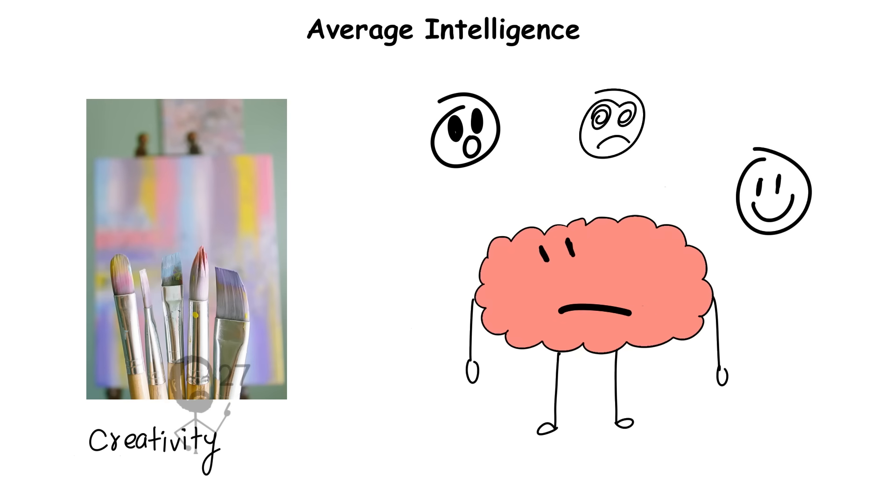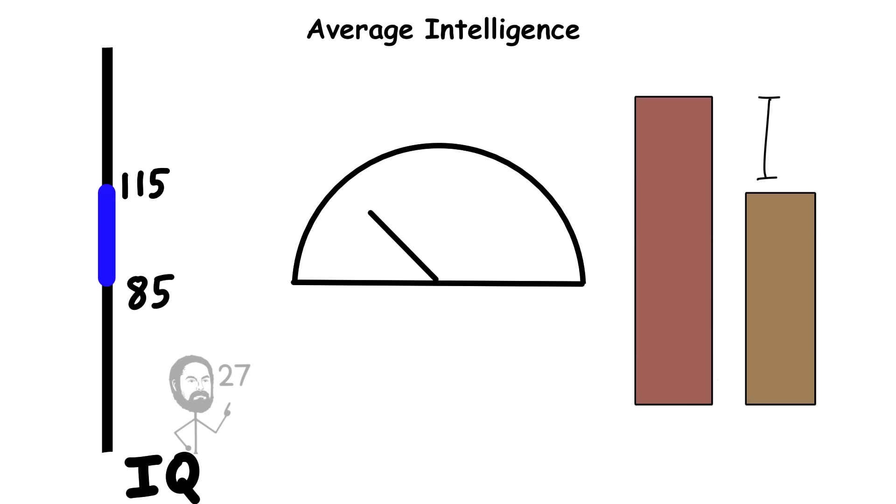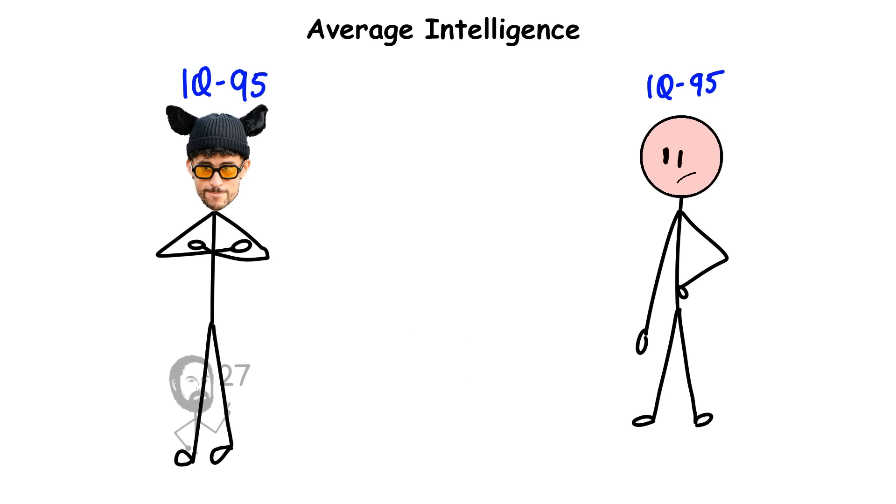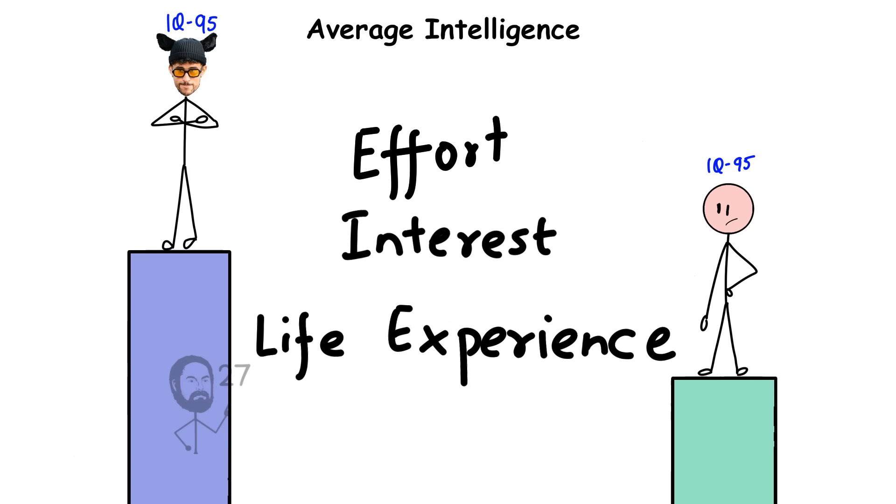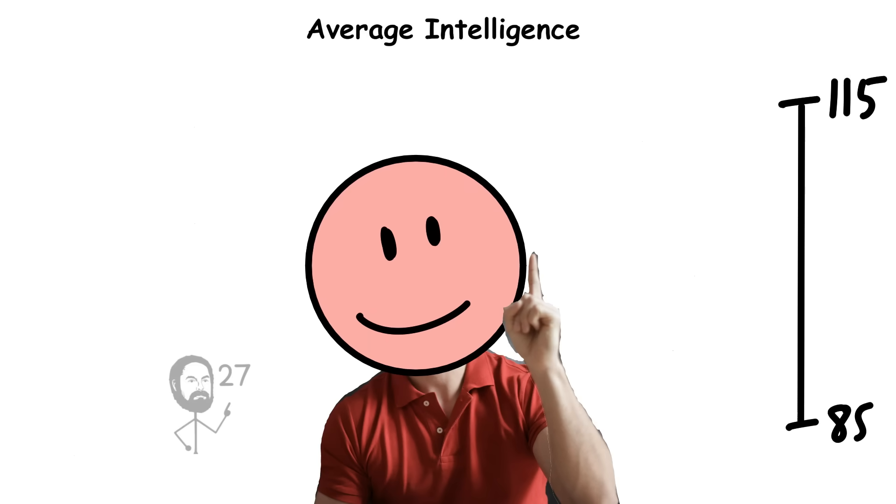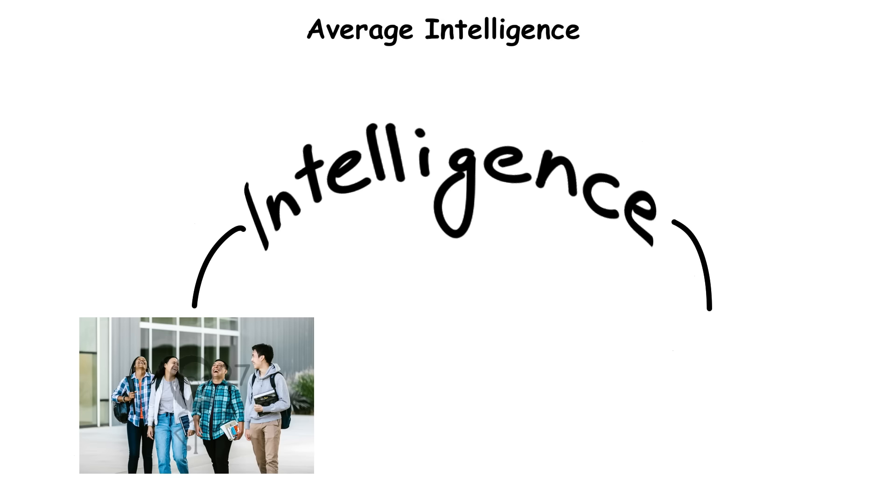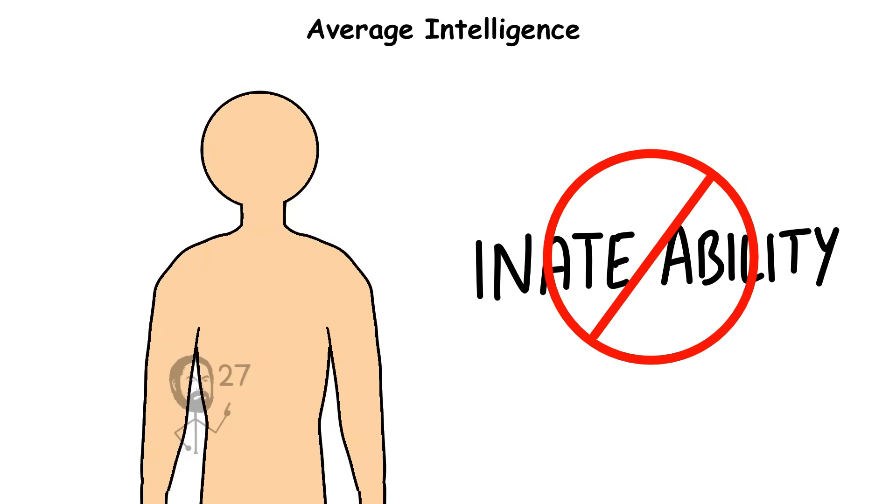Creativity, emotional intelligence, and motivation play a huge role in differentiating performance within this range. Two people with the same IQ may achieve vastly different results depending on effort, interests, and life experiences. Overall, this is the range where intelligence is versatile, adaptable, and shaped strongly by environment and education rather than pure innate ability.